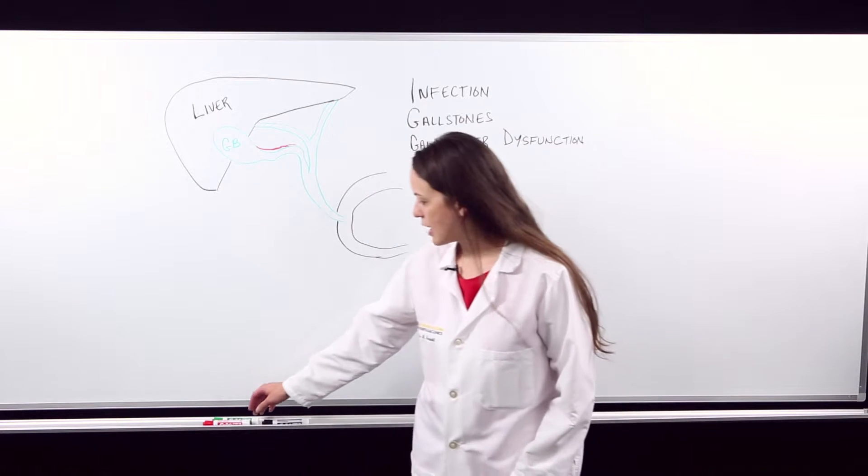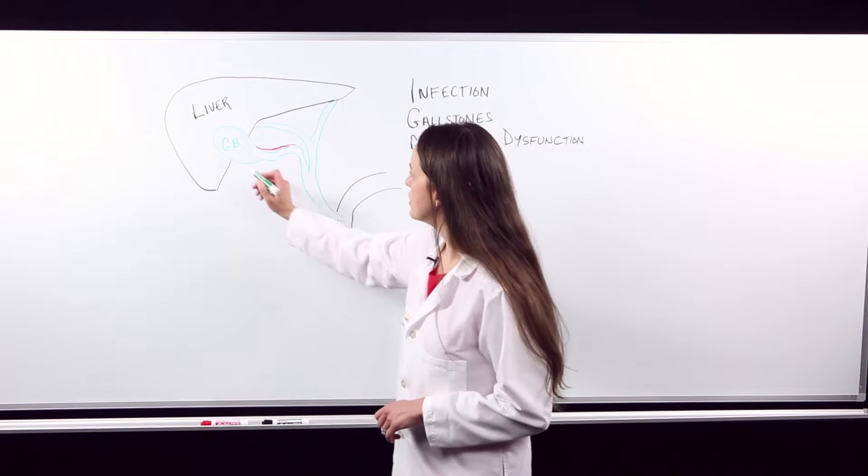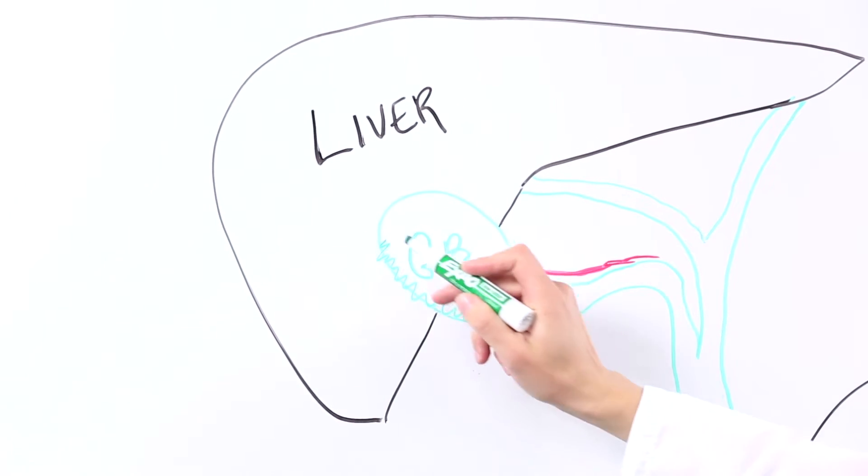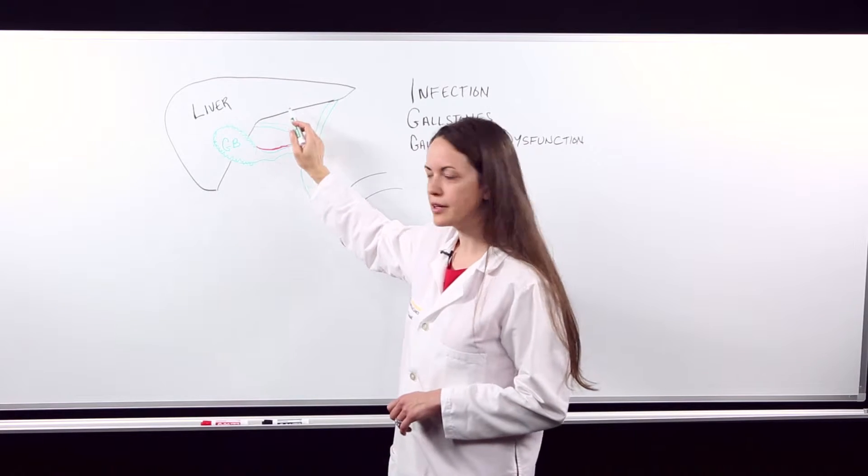Some of the problems that can happen include infection. So on an ultrasound you might see inflammation or thickening of the gallbladder wall. This is the gallbladder as it sits just under the liver in the body.